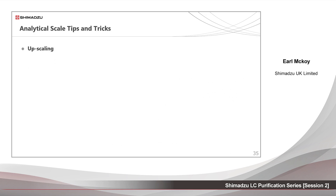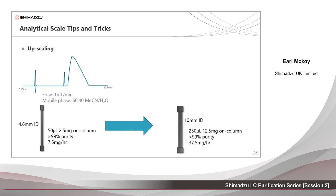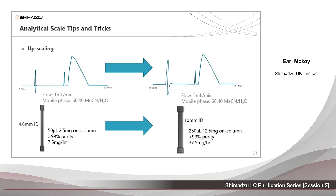Upscaling: with a 4.6mm ID column, a 2.5mg loading on column will give a rate of 7.5mg per hour — sufficient for NMR identification. If more material is needed, by moving to a 10mm ID column, we can purify 37.5mg per hour, which can be used for other processes.